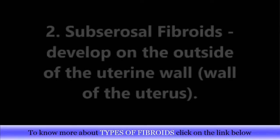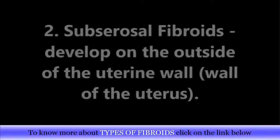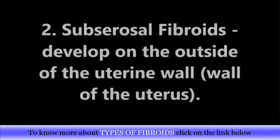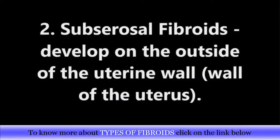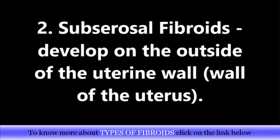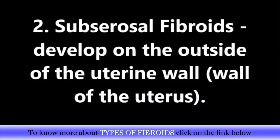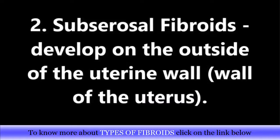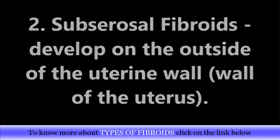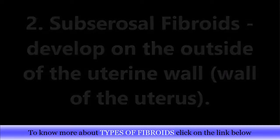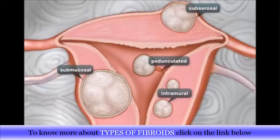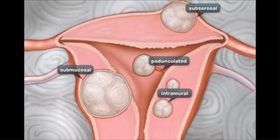Second is the subserosal fibroid. These fibroids grow on the outside of the uterine walls. These fibroids can sometimes press on the bladder, which causes urinary difficulties. They can also cause backaches, and this happens when the fibroid bulges from the back of the uterus and presses on the spinal nerves. In the diagram, you can see an example of the subserosal fibroids.